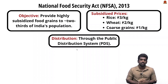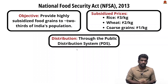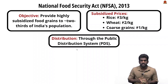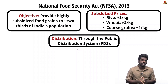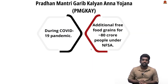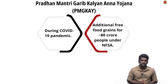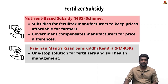Under the NFSA, beneficiaries receive rice at ₹3 per kilogram, wheat at ₹2 per kilogram, and coarse grains at ₹1 per kilogram through the Public Distribution System. The PDS operates across the country distributing food grains at subsidized prices especially to vulnerable groups. Schemes like Antyodaya Anna Yojana identify below poverty line households for PDS. The Pradhan Mantri Garib Kalyan Yojana, launched during the COVID-19 pandemic, provides additional food grains to around 80 crore people under the NFSA.